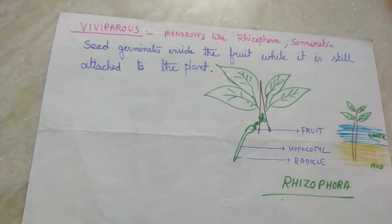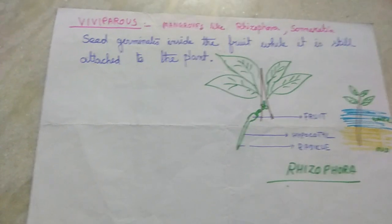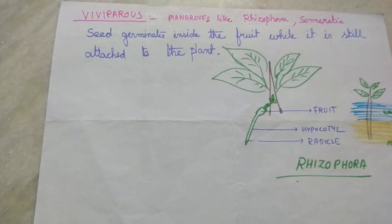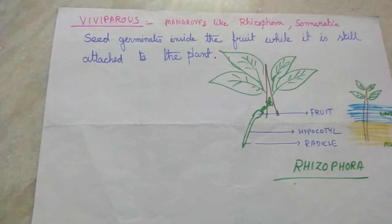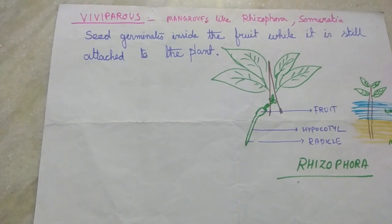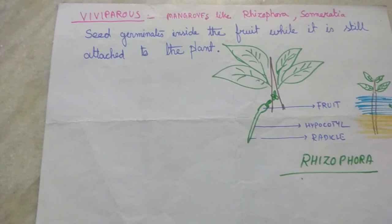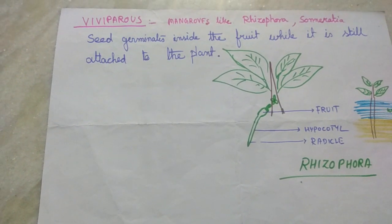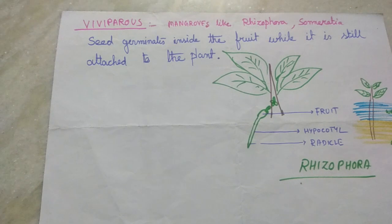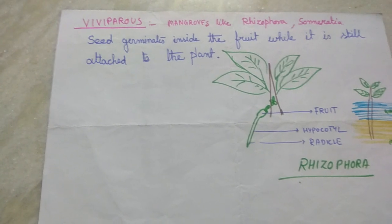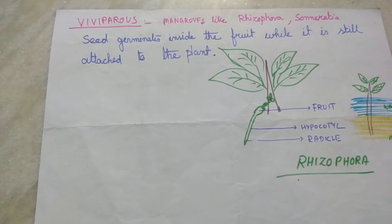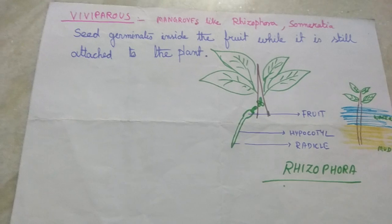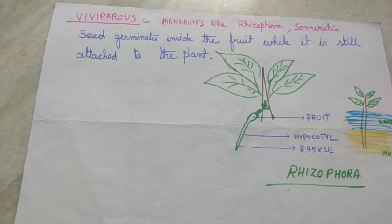In this chapter we have completed what is a seed, what is the process of germination, what happens after germination when a seedling occurs, what are the different types of seeds, and what are the different types of germination. Thank you.